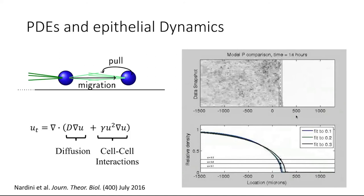This is just an example of a case where I could describe the mechanics relevant for a given data set. But often we're working with collaborators and they may have no idea what's going on — they have a whole laundry list of things that could or could not be occurring. For example, maybe there's diffusion, where cells migrate towards empty space, which can take a simple Fickian form or a more complicated nonlinear diffusion form.